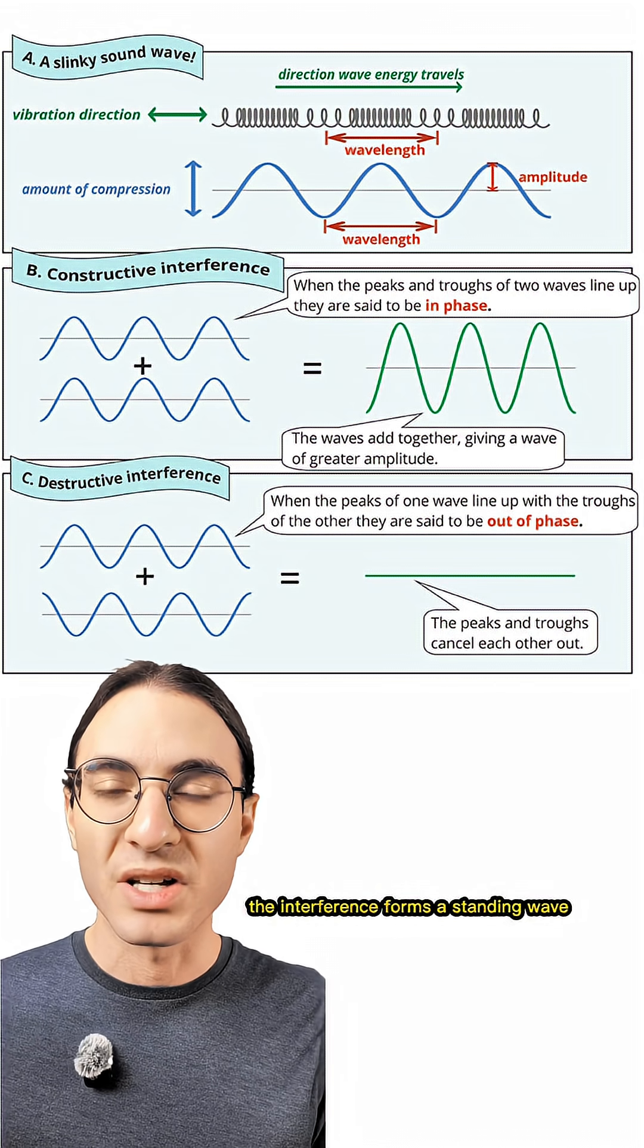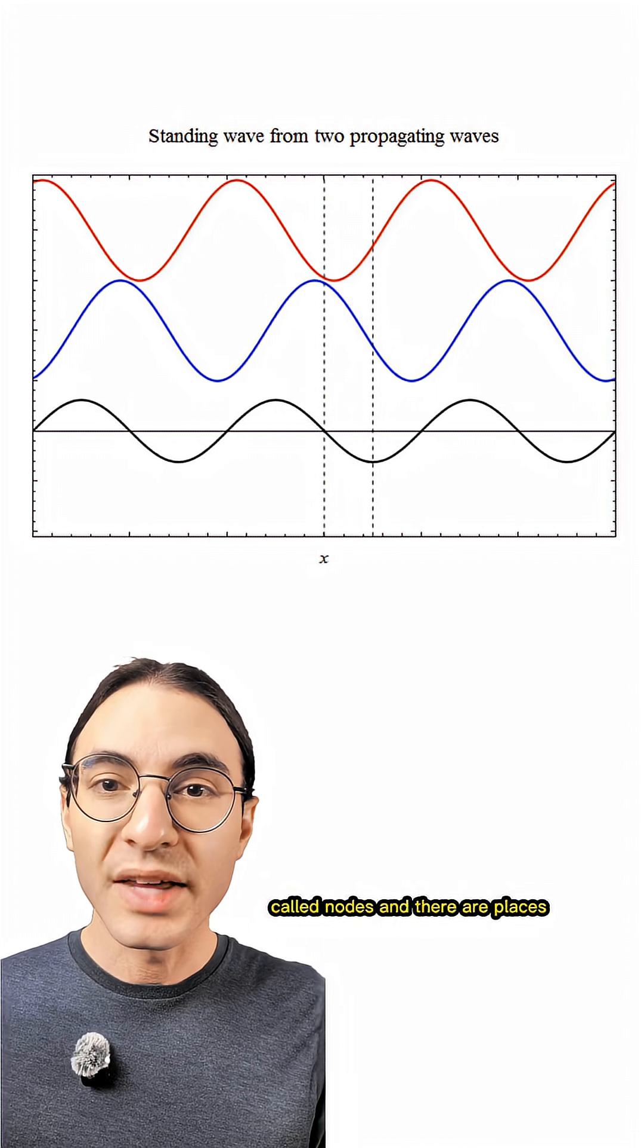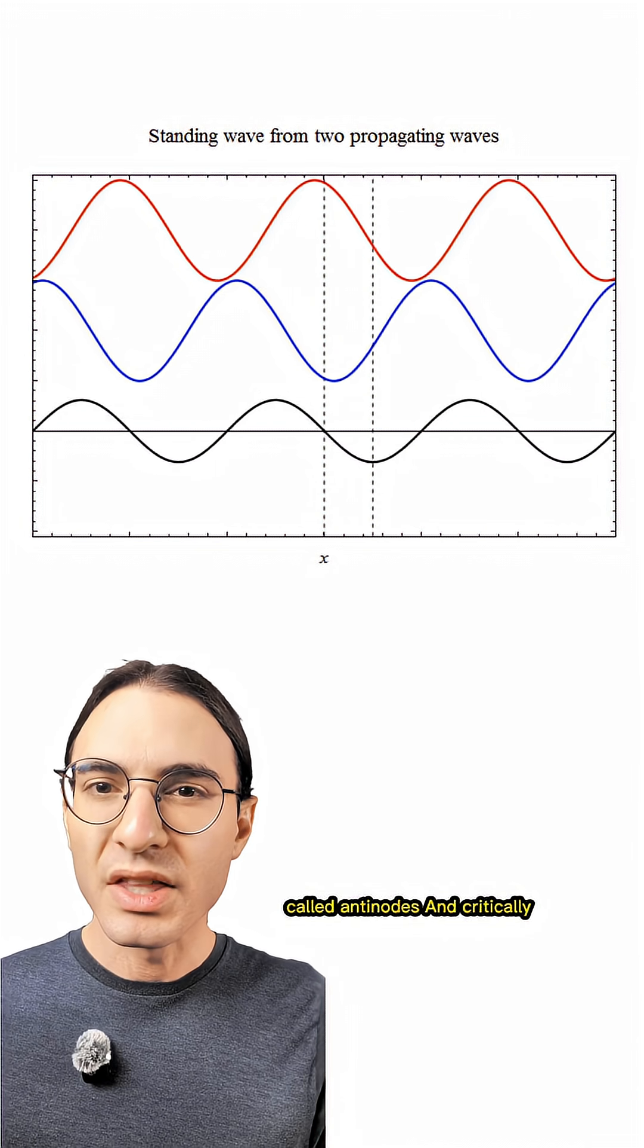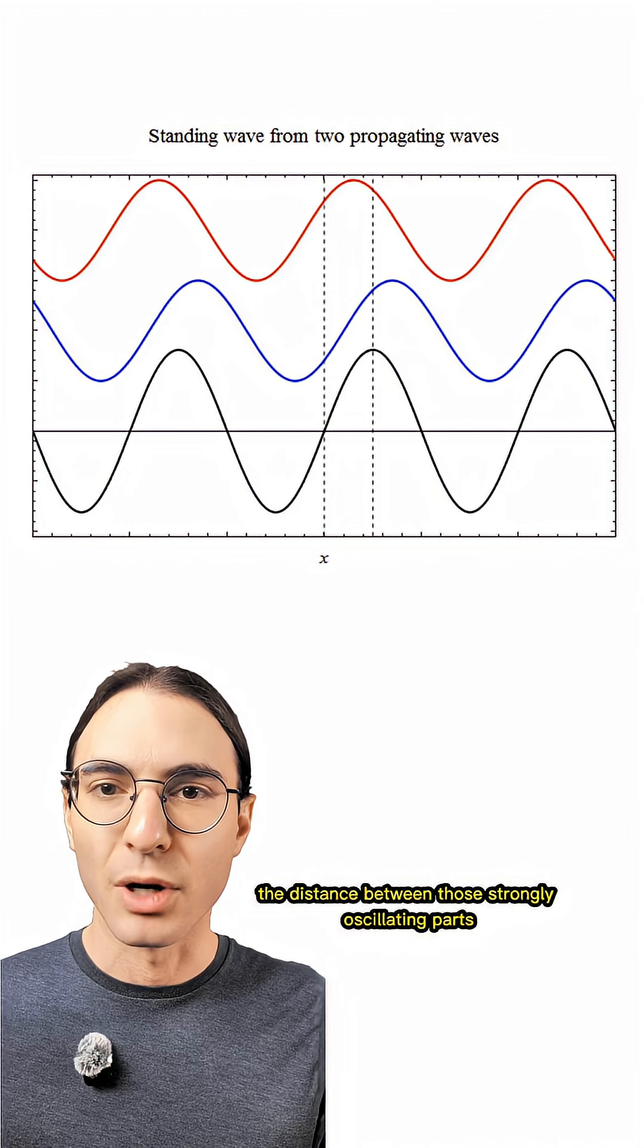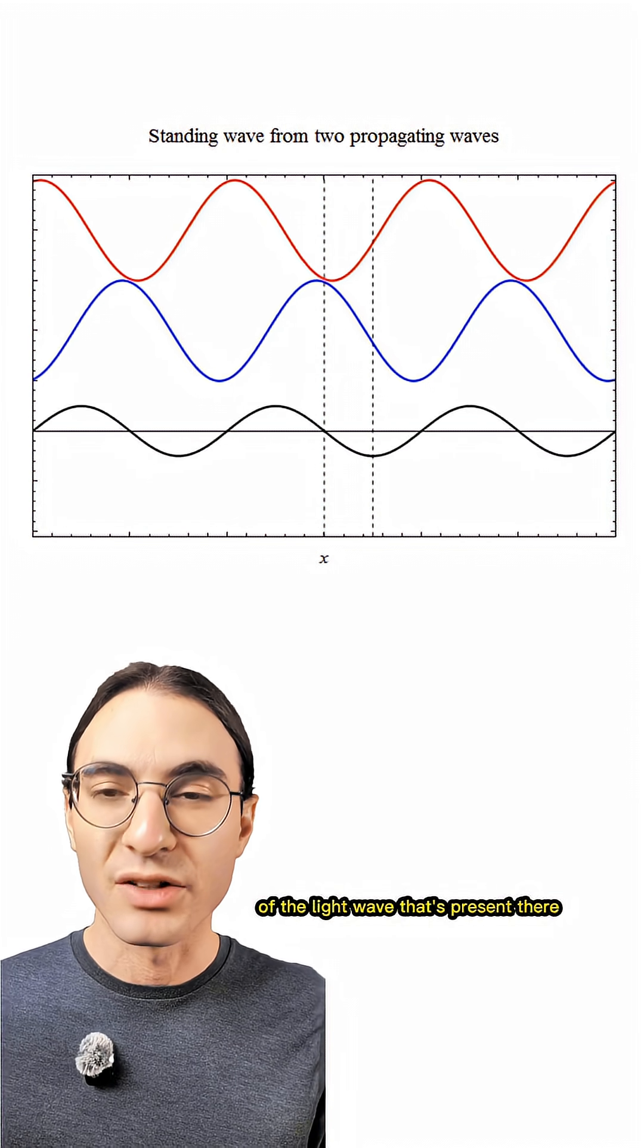In this case, the interference forms a standing wave. So there are places where the wave is always cancelled, called nodes, and there are places where the wave is oscillating strongly, called antinodes. And critically, the distance between those strongly oscillating parts of the standing wave depends on the wavelength or color of the light wave that's present there.